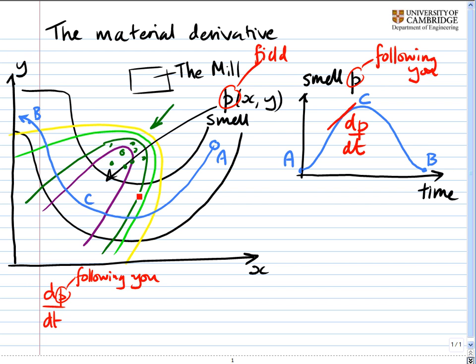Your velocity as you move through this field. Now let's look first of all at the gradient of the smell field. Gradients, obviously, they go perpendicular to the constant lines. And they always point towards the area of the strongest or the highest smell in this case. And the gradient there is grad p. Now which way are you moving?